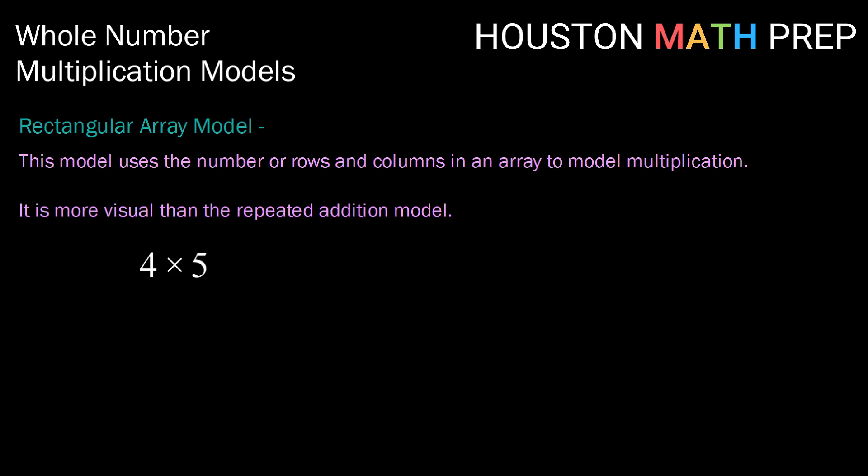It's more visual than the repeated addition model. Now let's take a look at 4 times 5 again. In the rectangular array model, we would build a rectangle with 4 rows with 5 items in each row.